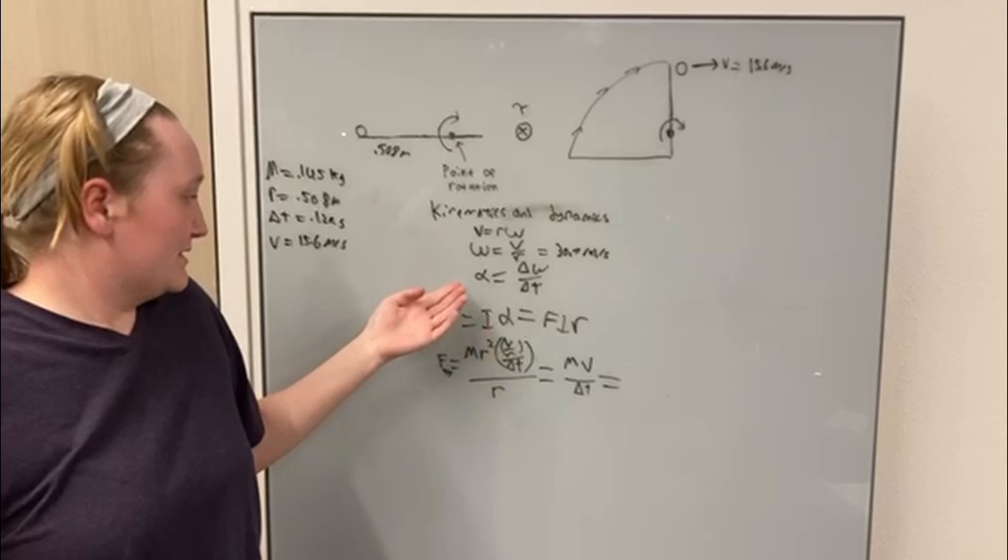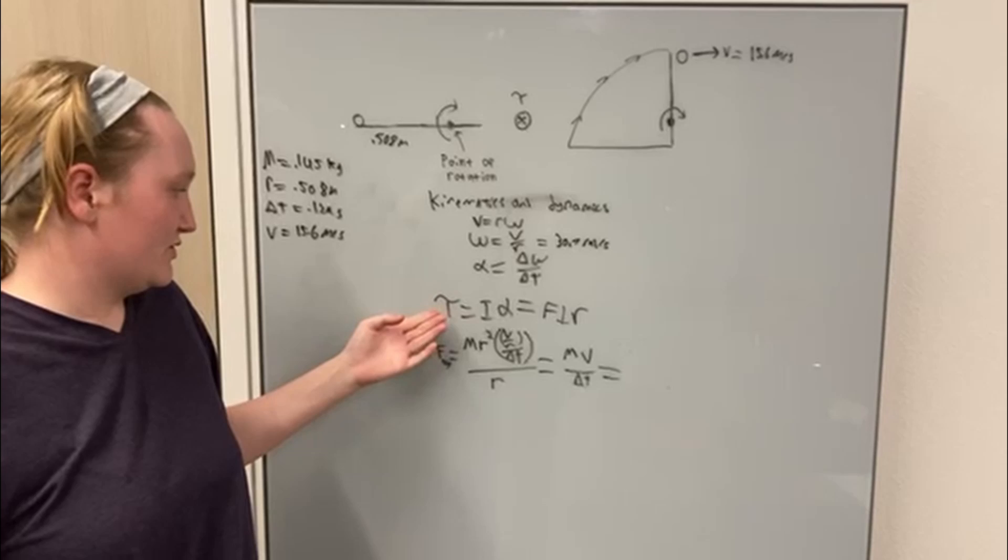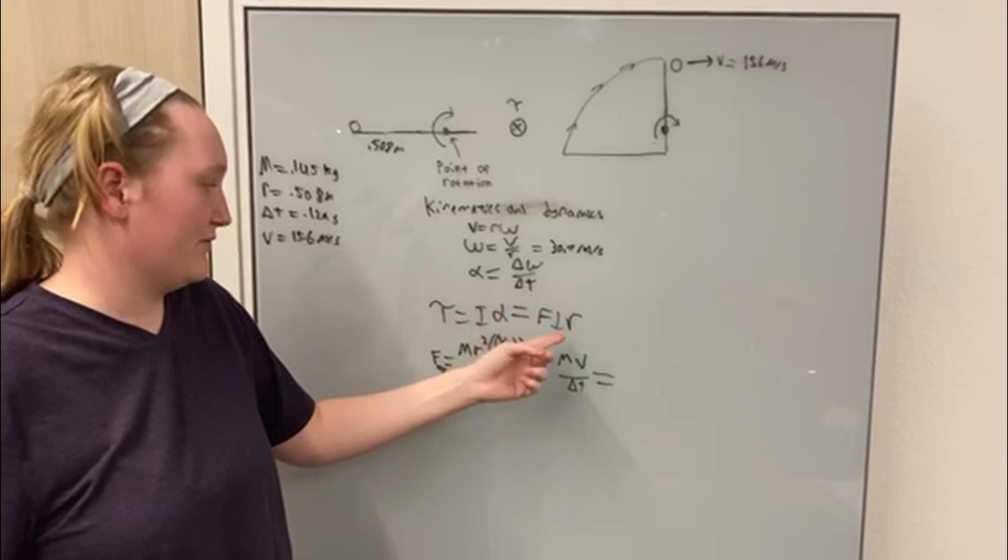And if we use the angular acceleration times the moment of inertia, we can find the torque. Torque also equals the force times radius. So if we divide the torque by the radius, we get the average force.